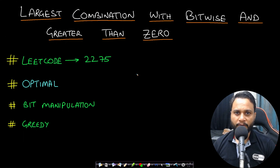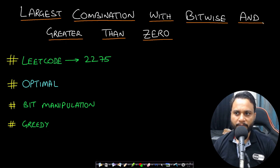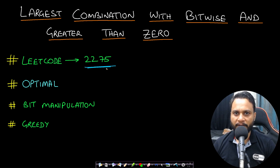Hello guys, welcome back to TechDos. In this video we will look at the Largest Combination with Bitwise AND Greater Than Zero problem, which is LeetCode number 2275, and we will be looking at the optimal solution.